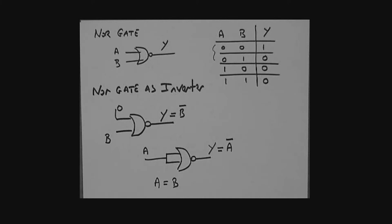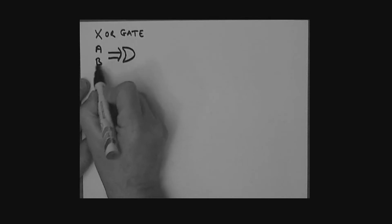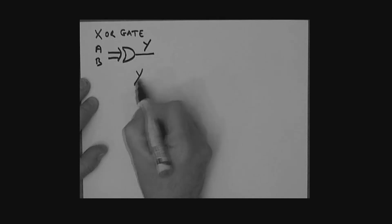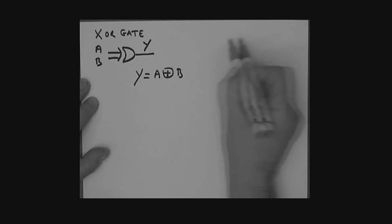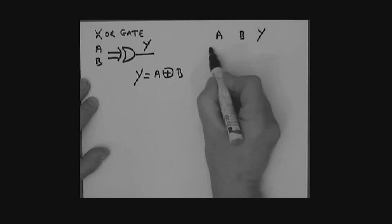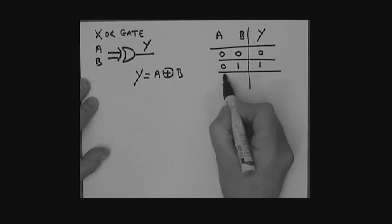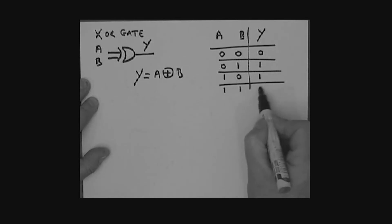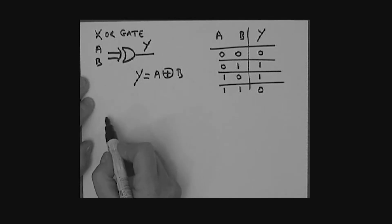Now let's look at the exclusive OR gate, or XOR gate. The symbol looks like an OR gate with an extra curved line. Inputs A and B, output Y. Y equals A XOR B. Truth table: 0,0 → Y is 0; 0,1 → Y is 1; 1,0 → Y is 1; 1,1 → Y is 0.